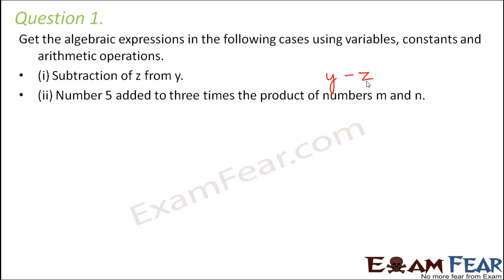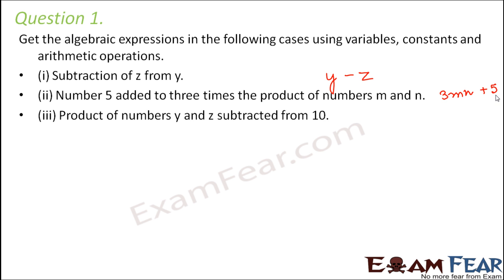Number 5 added to 3 times the product of numbers m and n. The product of m and n is mn. Three times the product of m and n is 3mn, and when 5 is added to this, we get 3mn plus 5. So this is the desired expression.